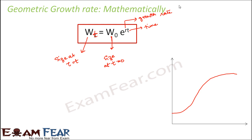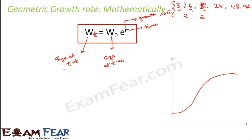Now this is known as geometric growth rate because it is like a geometric progression. In geometric progression the series would be something like: 3, 6, 12, 24, 48, 96. This is an example of geometric progression because 6 divided by 3 is 2, and 12 divided by 6 is 2 — so every successive term is double the previous one. So 3×2=6, 6×2=12, 12×2=24, 24×2=48. At each step it gets multiplied, so the value increases very fast in a geometric progression, and that is why it is known as a geometric growth rate.